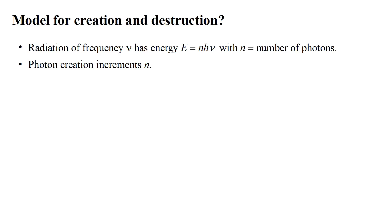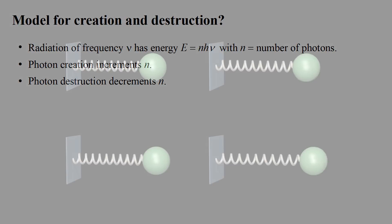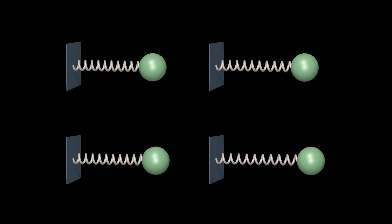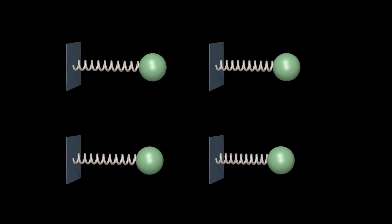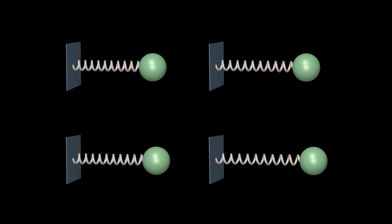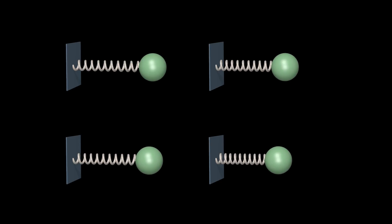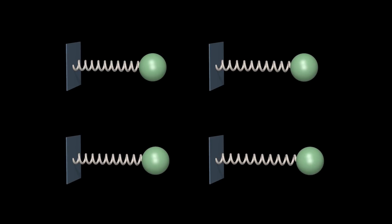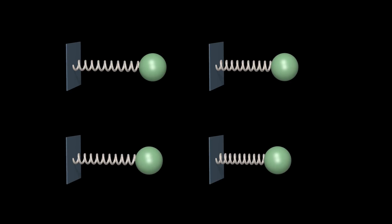When a photon is created, n increments by one. When a photon is destroyed, n decrements by one. This is a physical system characterized by a single frequency of oscillation and a variable amount of energy. A particle on a spring is a classical system sharing these properties. The oscillation frequency is fixed by the particle's mass and the spring's stiffness. The more you initially stretch the spring, the more energy you store in the system, and the larger is the resulting oscillation amplitude. But the oscillation frequency remains the same.